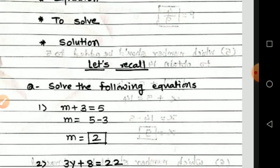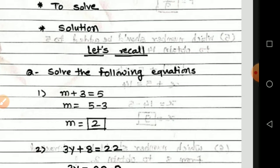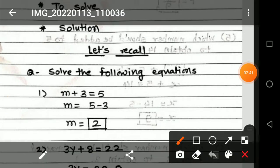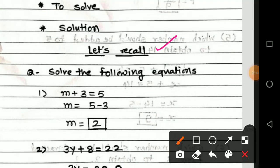Such equations we have solved in sixth, seventh, and eighth. Let us recall these examples. Here the question is: solve the following equations. Identification of a linear equation is easy — if the power of every variable used in the equation is one (power means index is one), then it is called a linear equation.